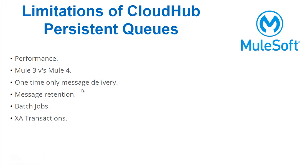Regarding one-time message delivery: one-time message delivery cannot be guaranteed with CloudHub Persistent Queues. Duplicate messages can be sent, so if your solution requires strict one-time delivery, you should not use this. For message retention: this queue will retain messages for four days. This retention period is not customizable, so CloudHub Persistent Queues should not be used for any long-term storage.